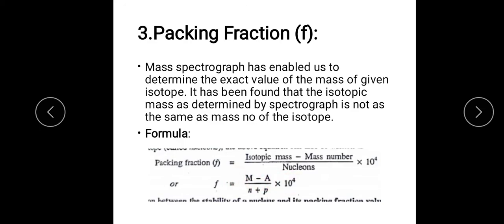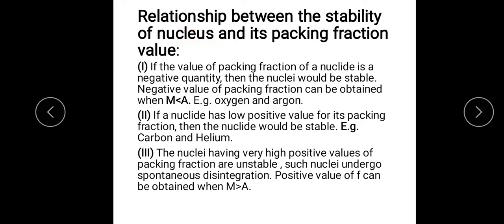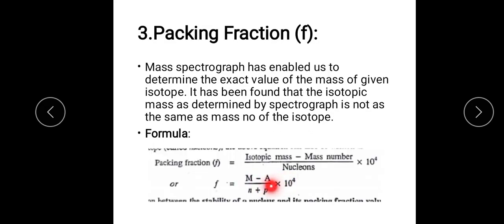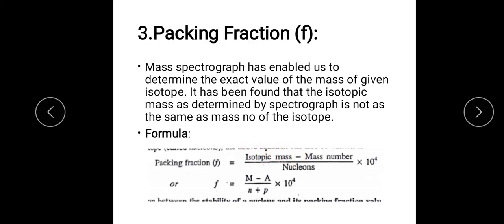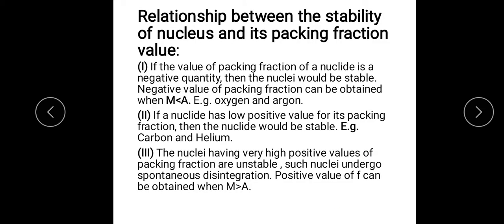We look at the value of the packing fraction to determine whether a nucleus is stable or unstable. If the packing fraction value is negative — meaning isotopic mass is less than the mass number — then the numerator is negative, giving a negative packing fraction, and the nucleus would be stable. When the isotopic mass is more than the mass number, the packing fraction becomes positive.